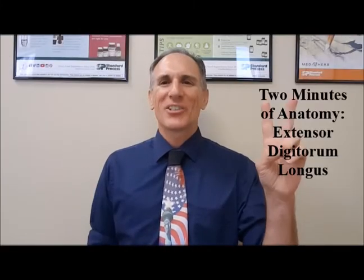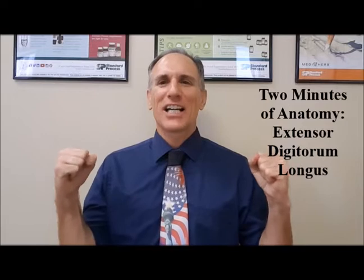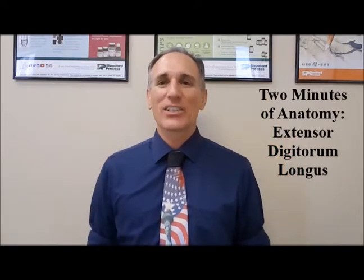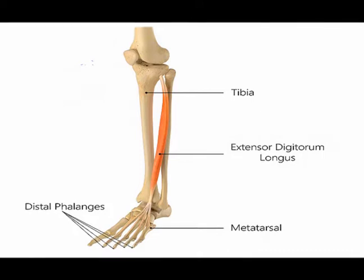Hello and welcome to Two Minutes of Anatomy. I am Dr. Donald Ozzello of Championship Chiropractic in Las Vegas, Nevada. On today's Two Minutes of Anatomy, I'm going to speak about an extrinsic muscle of the foot which is located in the anterior compartment of the lower leg. It's called the extensor digitorum longus.